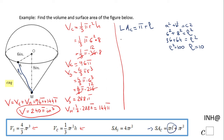Now we can go back and get the lateral area of the cone: π times the radius 6 times the slant height 10. So the lateral area of the cone is 60π.